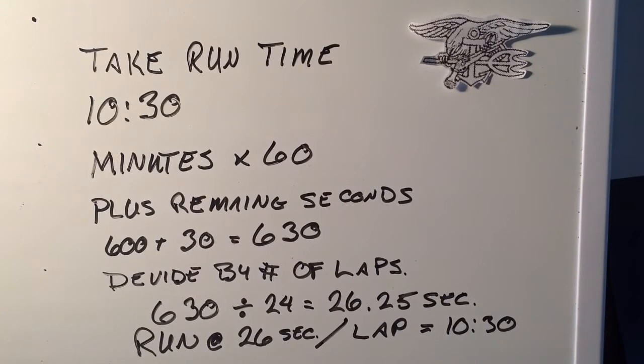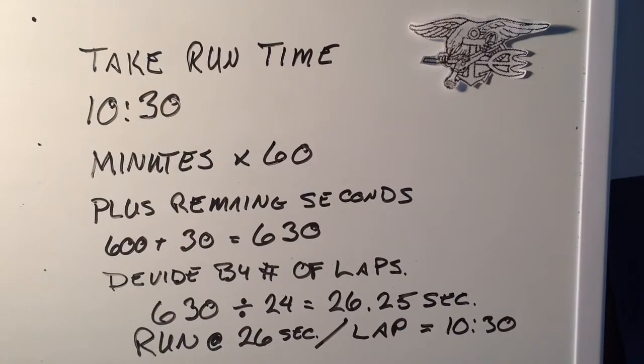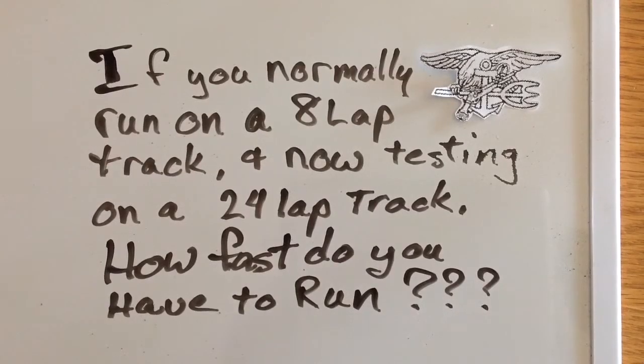Next you're going to take the number of laps on the track. This is important because you may encounter various tracks. If you're used to doing a PST on a six-lap track for a mile and a half, and then you go somewhere and have to run a 24-lap track, you won't know how fast per lap you need to run to acquire your race pace in RPMs.